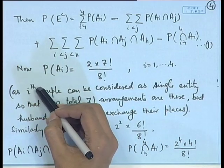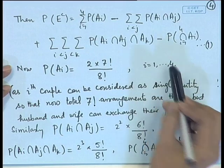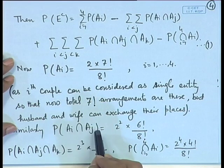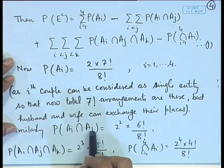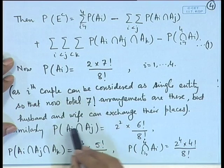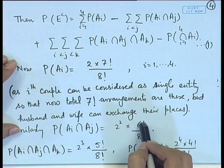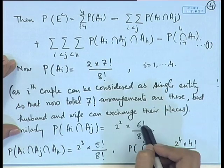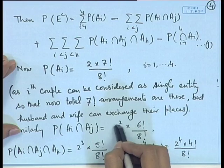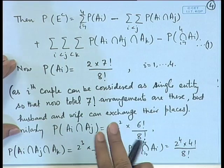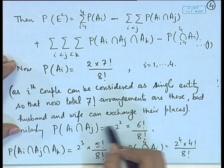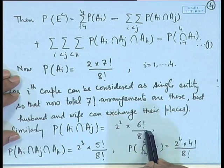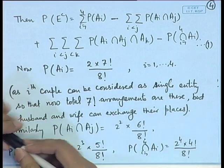This holds for all i = 1 to 4. For P(A_i ∩ A_j): treating both the i-th and j-th couples as single entities gives 6 persons arrangeable in 6! ways. Each couple can internally interchange in 2 ways (2² total). So P(A_i ∩ A_j) = 2²·6!/8! for all i < j.